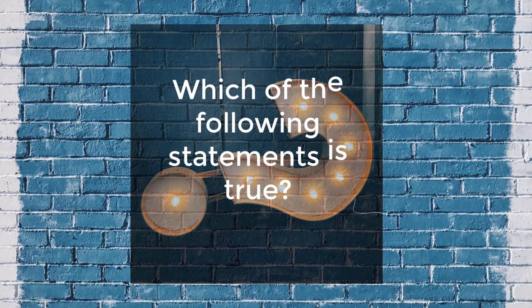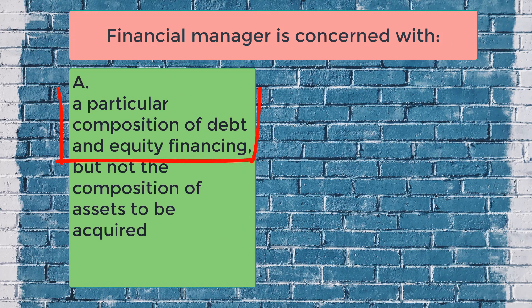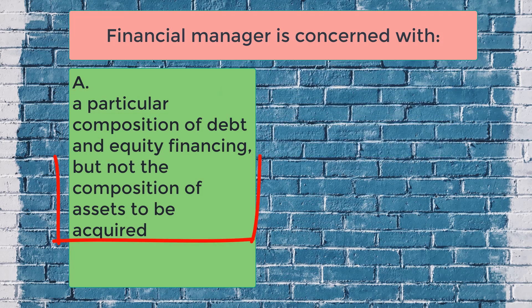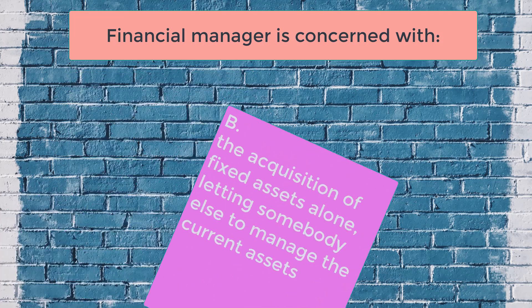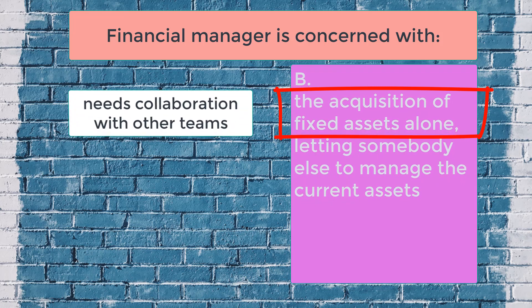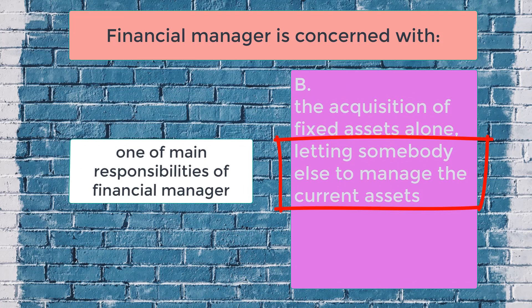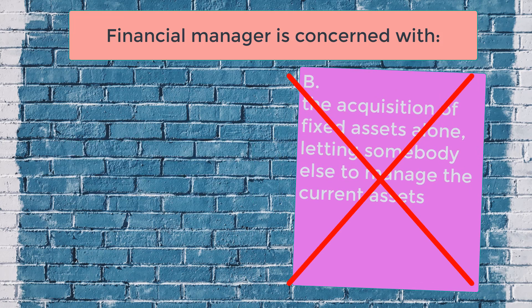Back to the question: which of the following statements is true? For answer A, the statement about a particular composition of debt and equity financing is about capital structure decision, which is a financing decision. However, the statement 'but not the composition of assets to be acquired' ignores the investment decision. Therefore, A is not the correct answer. For B, a financial manager cannot decide about fixed assets alone — he needs to communicate with the operations and engineering team. The financial manager has more responsibility in managing current assets such as receivables. B is not the correct answer.